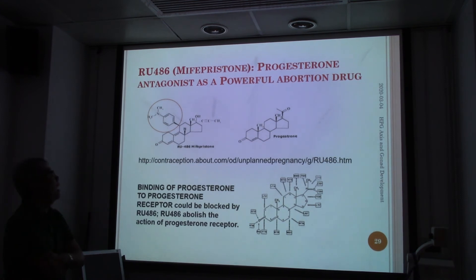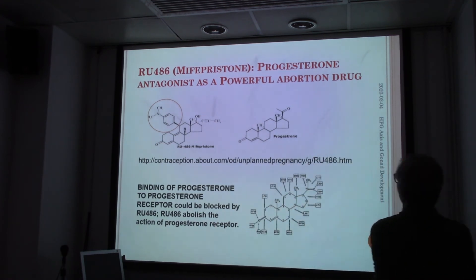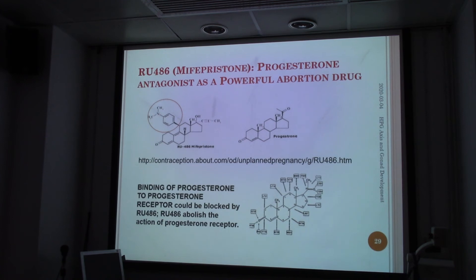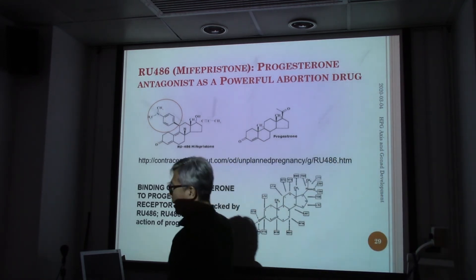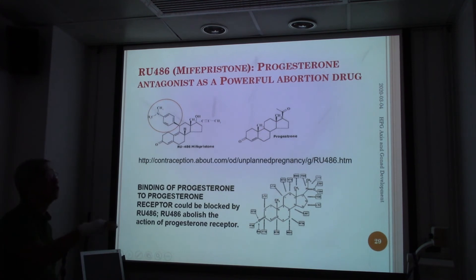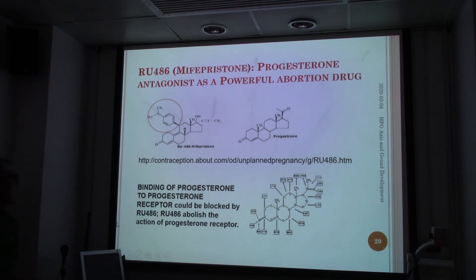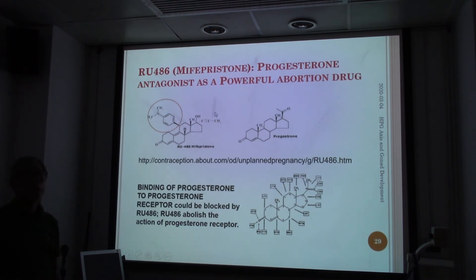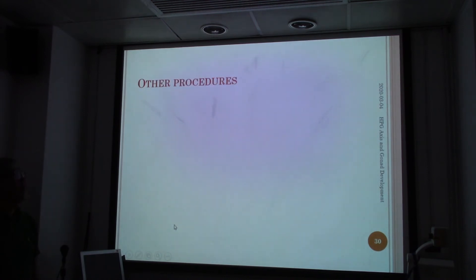There is another more powerful drug known as RU486. It is a strong progestogen antagonist — a powerful abortion drug. We need progestogens to form the uterine lining, and RU486 has an extra bulky structure that stops the action of progestogens so that the uterine lining cannot be formed. It binds to the progesterone receptor and abolishes the function of progestogens so that the uterus cannot support the baby — used as a morning after pill.